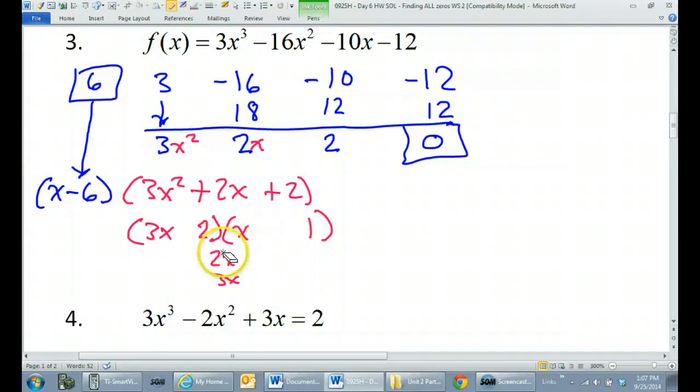Okay, that's going to bother me. I'll try switching them around. If I put the 1 here and the 2 here. Inner, I have 1x. Outer, I have 6x. Again, there's no way I'm going to get a 2 out of this. That means that this is not factorable.